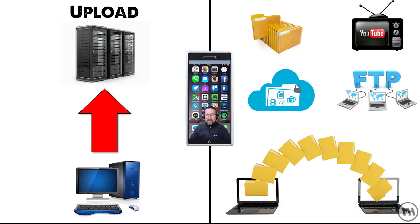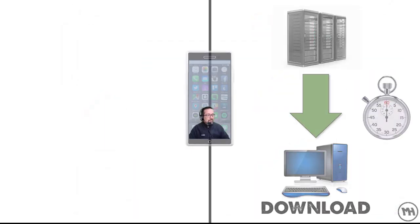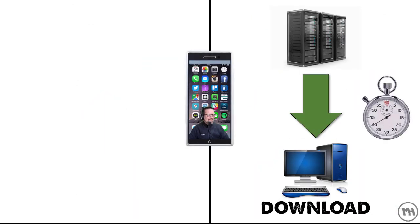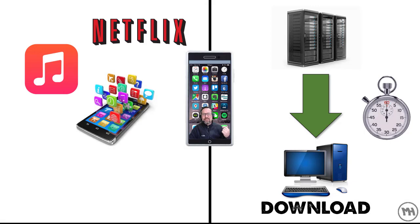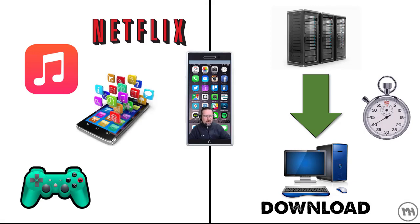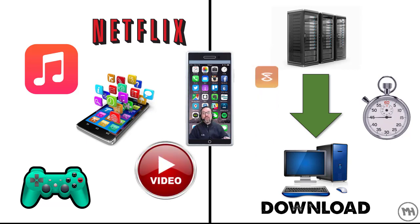So that's the sending of information. Now let's have a look at download. Download is pretty much what we probably spend more time doing. Downloading requires a lot more speed because we're looking at Netflix, we're downloading music, downloading all kinds of applications whether it's on our phones or our computers, we're downloading games or playing games online or watching videos.